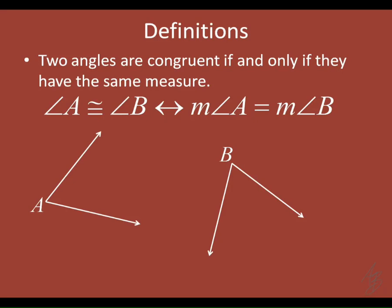Here's a picture: one angle has A at the vertex, the other has B at the vertex. Just like with segments, we could take angle A, pick it up, move it over on top of angle B, and it would match up perfectly. To mark angles as congruent, we put little arcs inside the angles. Those arcs tell us the angles are congruent to each other.